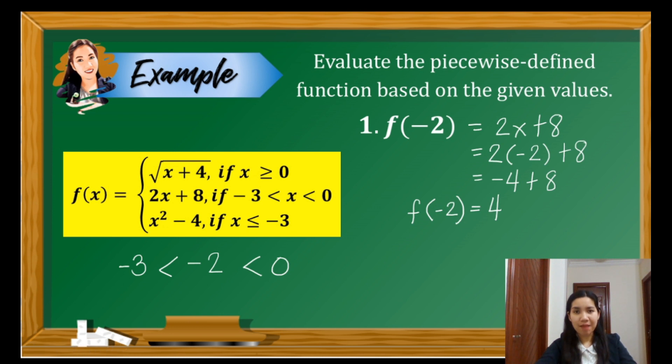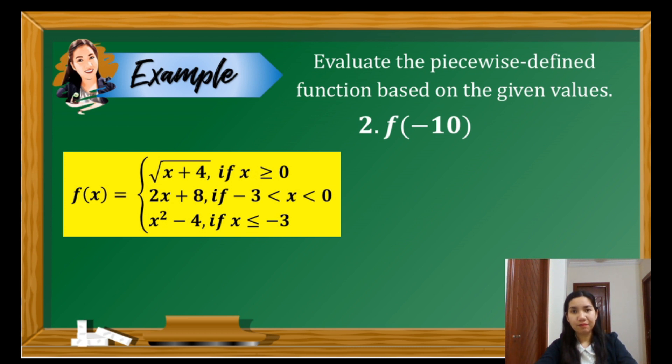Let's try another example. Here, we have to evaluate the function when x is negative 10. Same procedure, locate negative 10. Negative 10 is less than negative 3. So we have to use x² - 4 as our function. Substitute negative 10. So we have negative 10 squared minus 4. The square of negative 10 is positive 100. Minus 4 gives us 96. So the value of the function when x is negative 10 is 96.